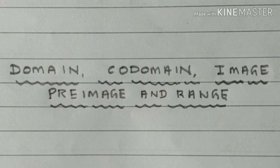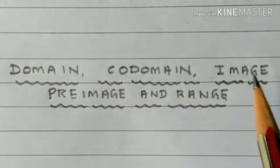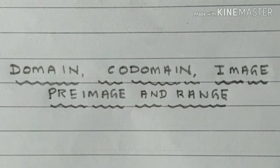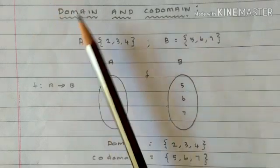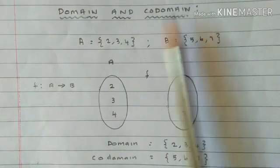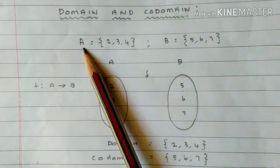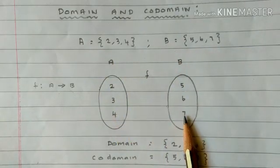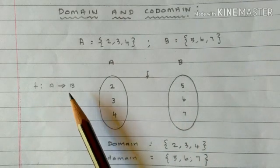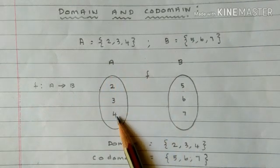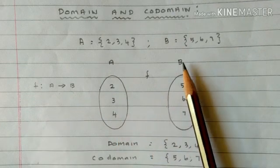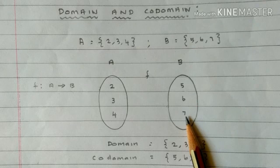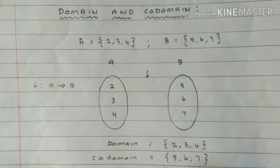In this chapter, Relations and Functions, we commonly come across terms like domain, codomain, image, preimage, and range. Consider A and B as two sets: A = {2, 3, 4} and B = {5, 6, 7}, represented in a Venn diagram. For a function from A to B, all elements in set A form the domain — that is 2, 3, 4 — and all elements in set B form the codomain — that is 5, 6, 7.